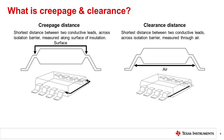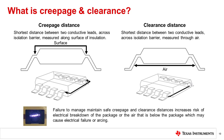Both of these parameters are important because when an electric field is present across the isolator, electrical breakdown of either the package or of the air below the package can cause electrical failure or even arcing. Minimum creepage and clearance distances are defined by the IEC standards bodies as guidance intended to prevent air arcing during operation.